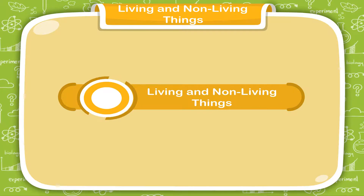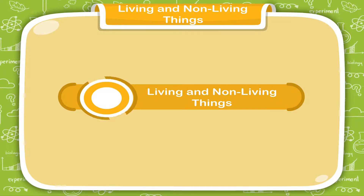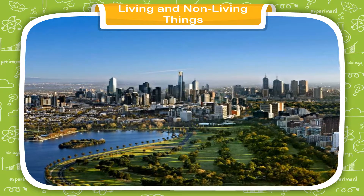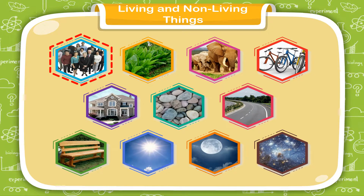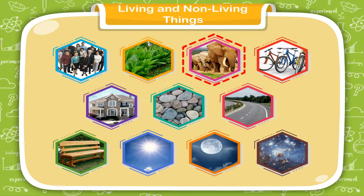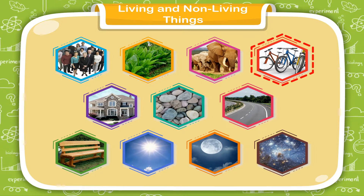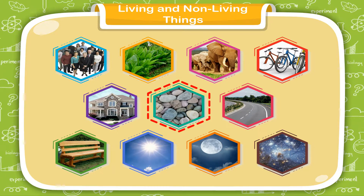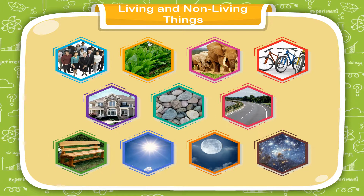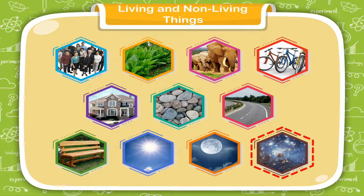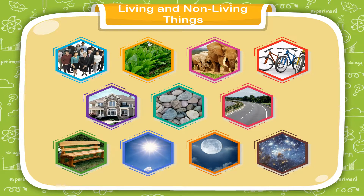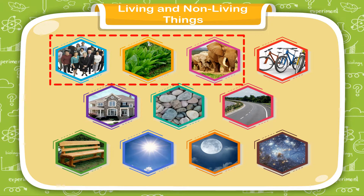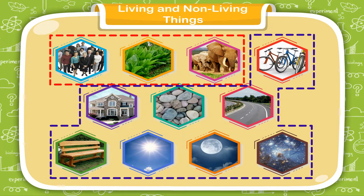Living and non-living things. There are many things in our surroundings such as human beings, plants, animals, bicycles, houses, stones, roads, benches, the sun, the moon, the stars, etc. These things can be categorized as living things and non-living things.